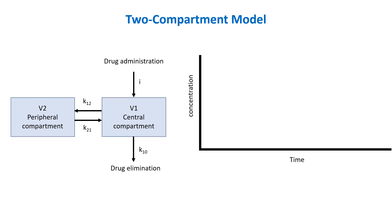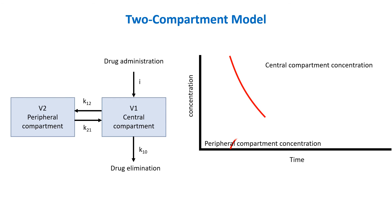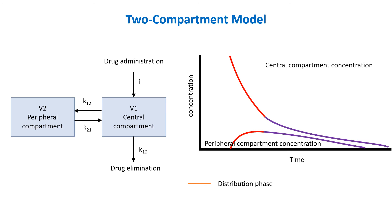So in the two compartment model, the decline in plasma drug concentration occurs in two phases. The first phase is the distribution phase, characterized by an initial rapid decline in serum drug concentration with a subsequent rise in drug concentration in the peripheral compartment.